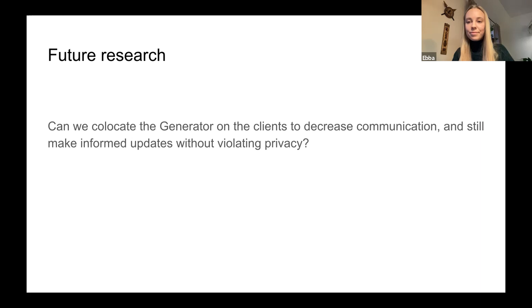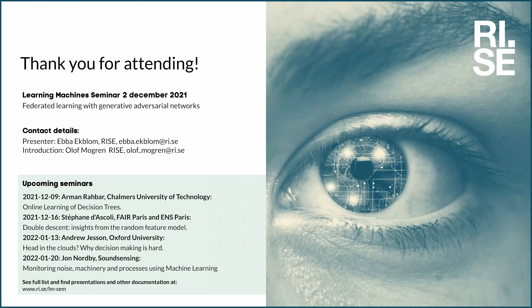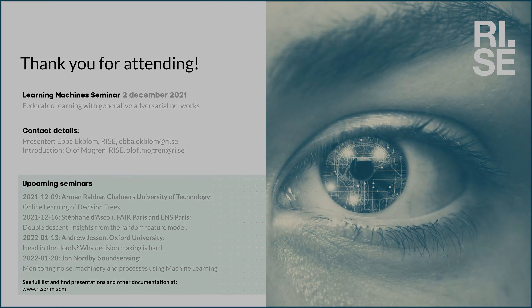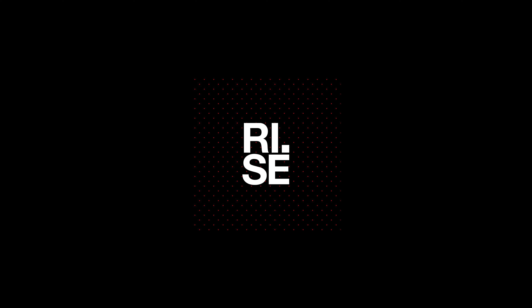Thank you very much, Ebba. Next week we welcome Arman Rahbar from Chalmers University. He's going to talk about online learning of decision trees. And the week after that, December 16th, we have Stefan Daskalakis from Facebook AI Research in Paris. He's going to talk about double descent — insights from the random feature model. And then we have a break for Christmas, and come back January 13th. So see you next week. Thank you for joining.